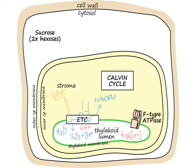That proton gradient is then able to power the F-type ATPase — the same enzyme found in the mitochondria. With the movement of protons back through this enzyme, it synthesizes ATP from ADP plus phosphate.